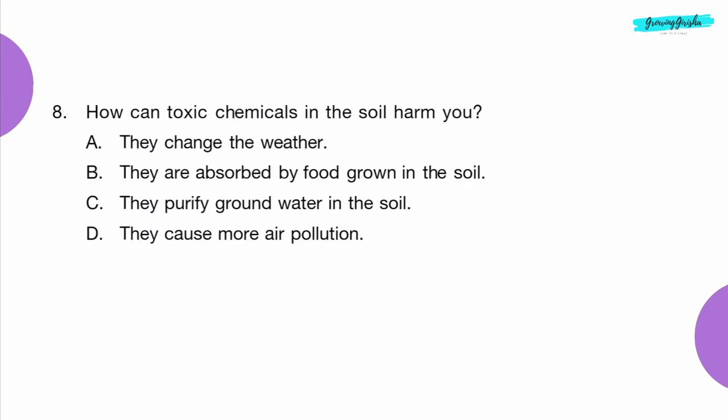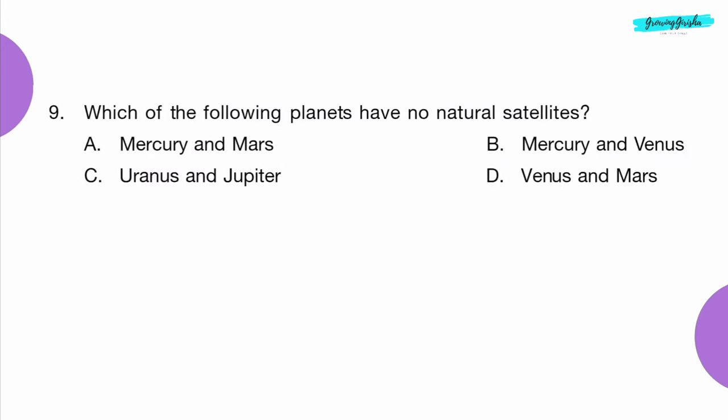Question 8: How can toxic chemicals in the soil harm you? Option B: They are absorbed by food grown in the soil.